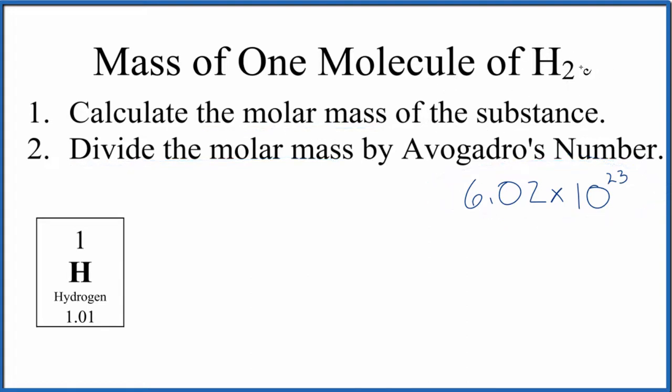So to find the molar mass for H2, we know that one hydrogen, we go to the periodic table, one atom of hydrogen is 1.01 grams per mole. We have two, so two times 1.01, that gives us, and the units are grams per mole, and we're talking about molar mass.